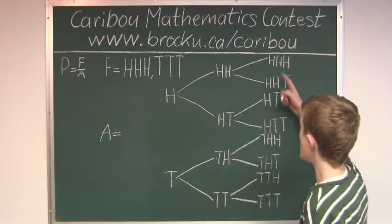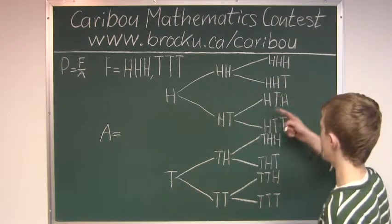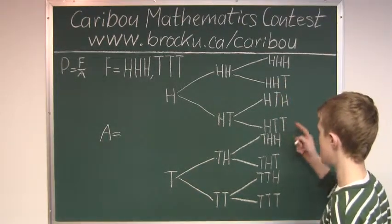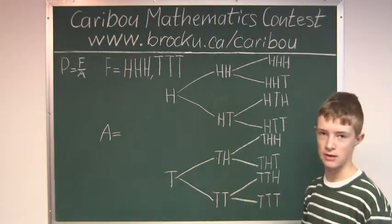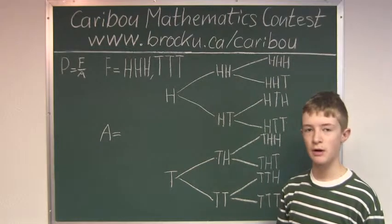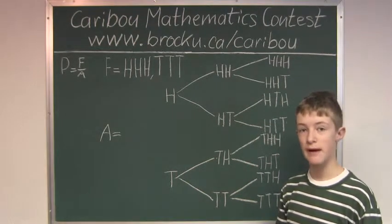Head head head, head head tail, head tail head, head tail tail, tail head head, tail head tail, tail tail head, and tail tail tail. So there are eight total possible events and there are two favorable events.